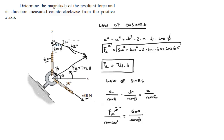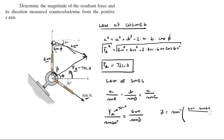FR we know to be 721.11, so all we have to do is solve for beta. Beta equals the sine inverse of 600 times sine of 60 over 721.11. That gives us beta equal to 46.1 degrees.